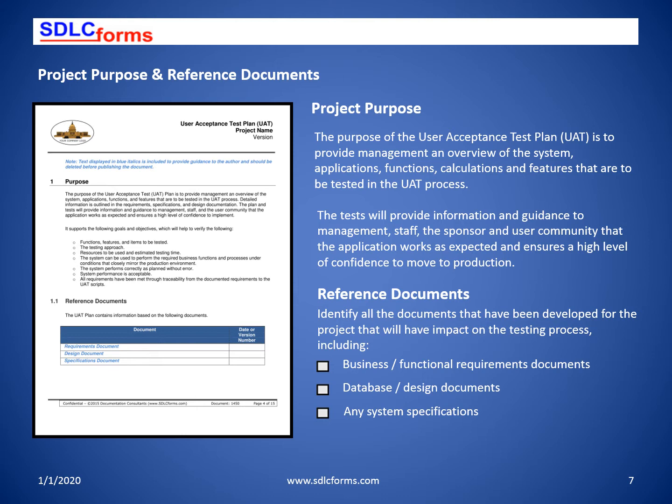UAT testing supports the following goals and objectives, which will verify the functions, features, items, and calculations to be tested, resources to be used, and estimated testing time. The system can be used to perform the required business functions and processes. The system performs correctly as planned without error. System performance is acceptable and all requirements have been met through traceability from the documented requirements to the UAT scripts.